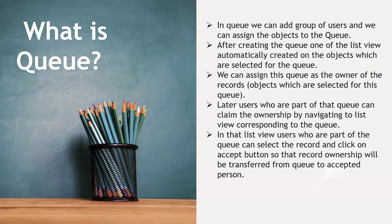What is a queue? A queue allows you to add a group of users and assign objects to that queue. After creating a queue, a list view is automatically created for the objects selected for that queue, and the queue can be set as the owner of records.